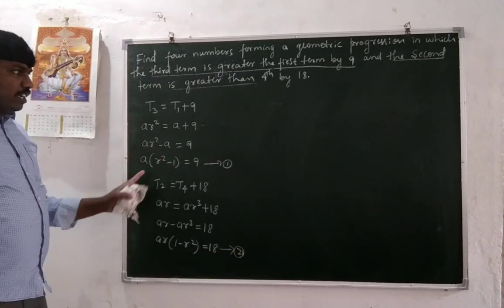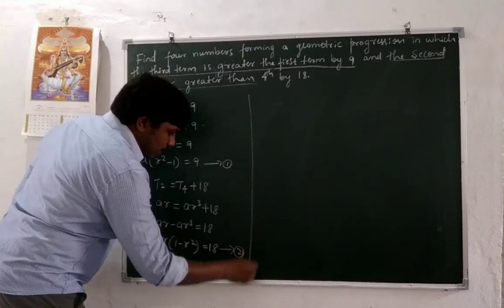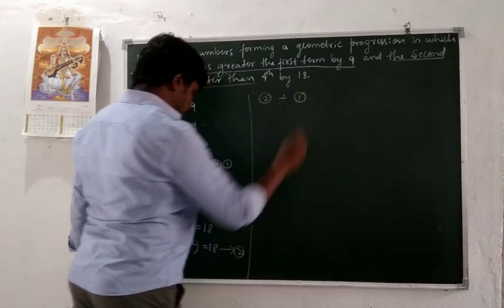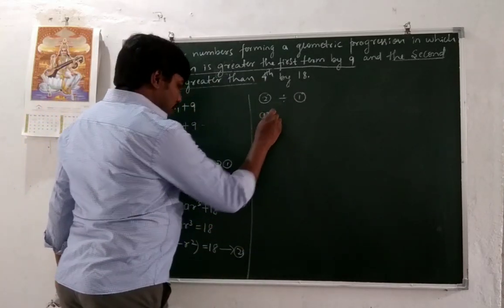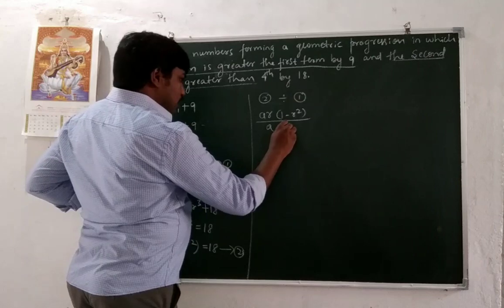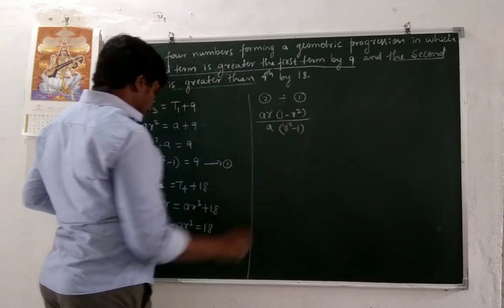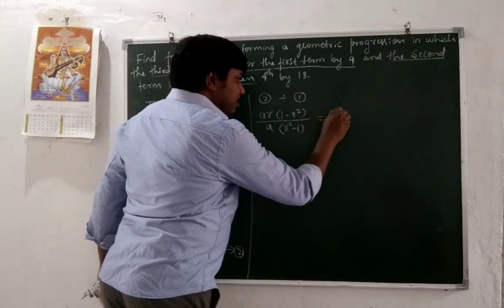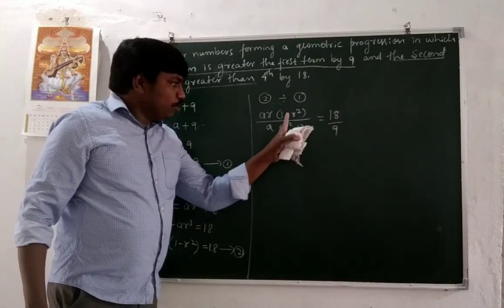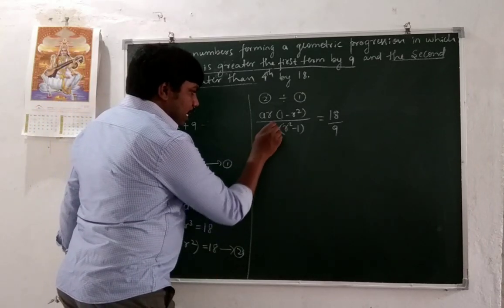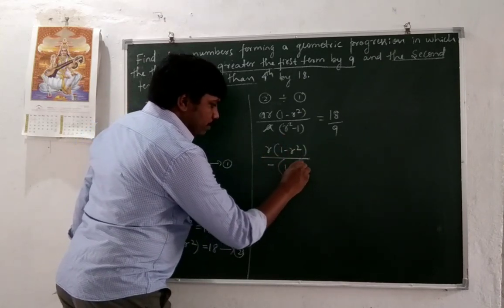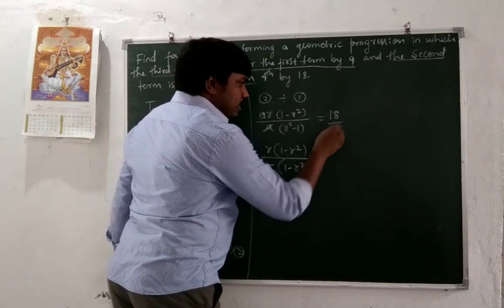Now, equation 2 divided by equation 1: ar(1 - r²) divided by a(r² - 1) equals 18 divided by 9. Note that (1 - r²) = -(r² - 1), so with the negative sign factored out, a cancels and (1 - r²) cancels.